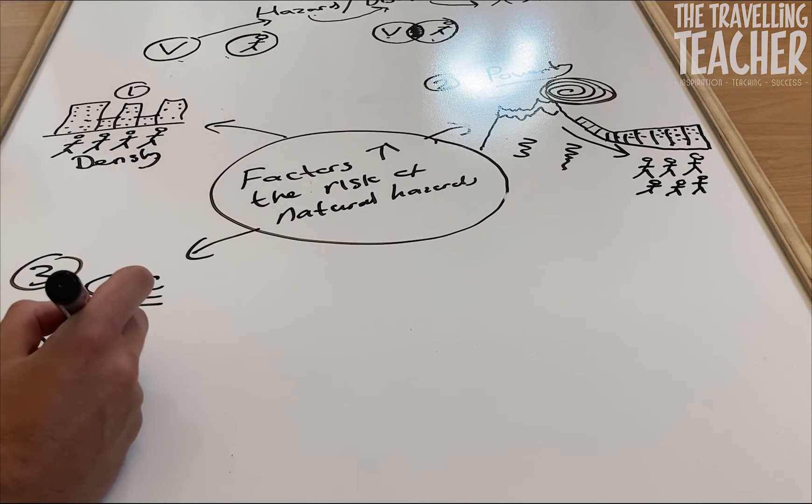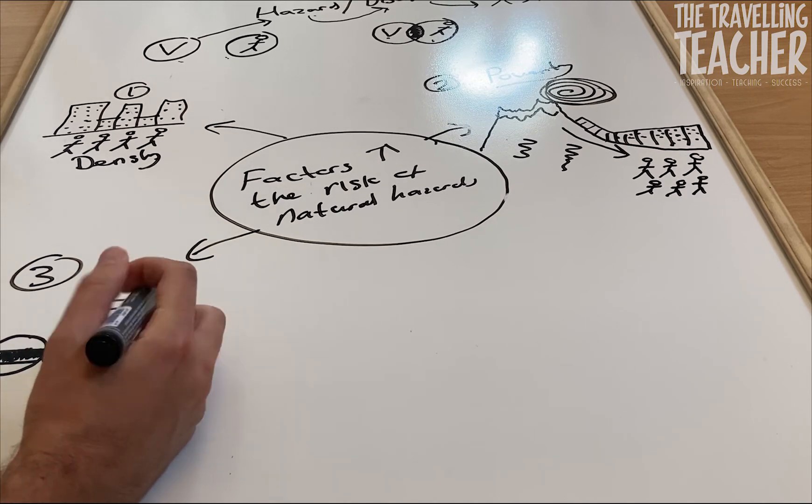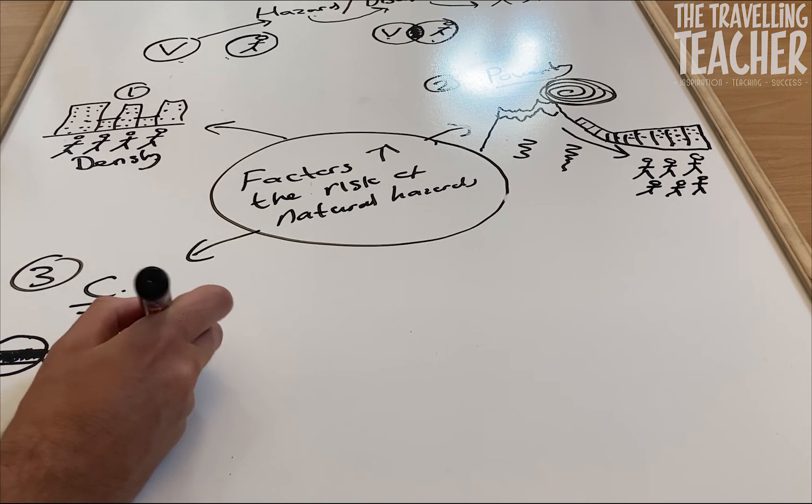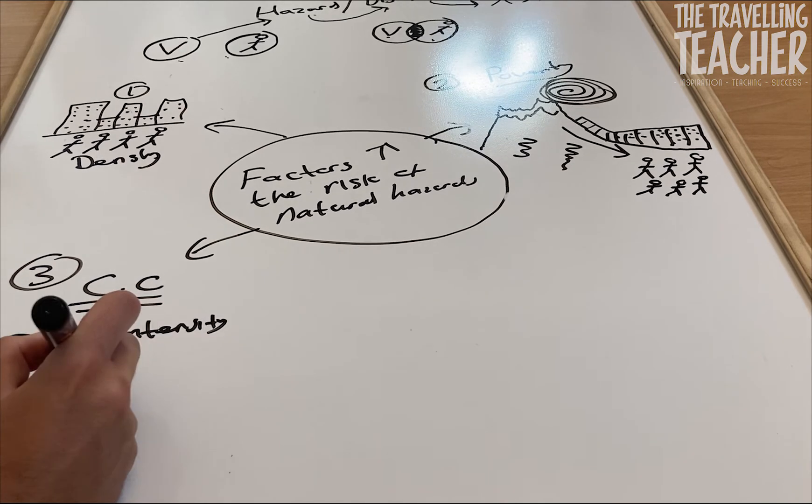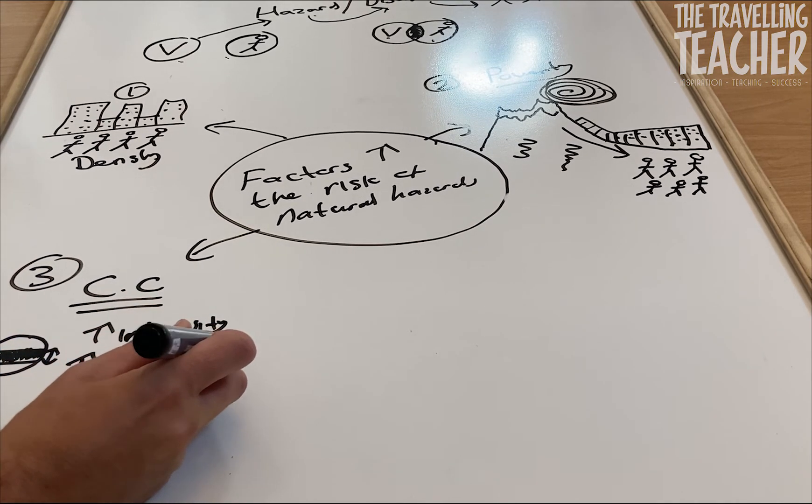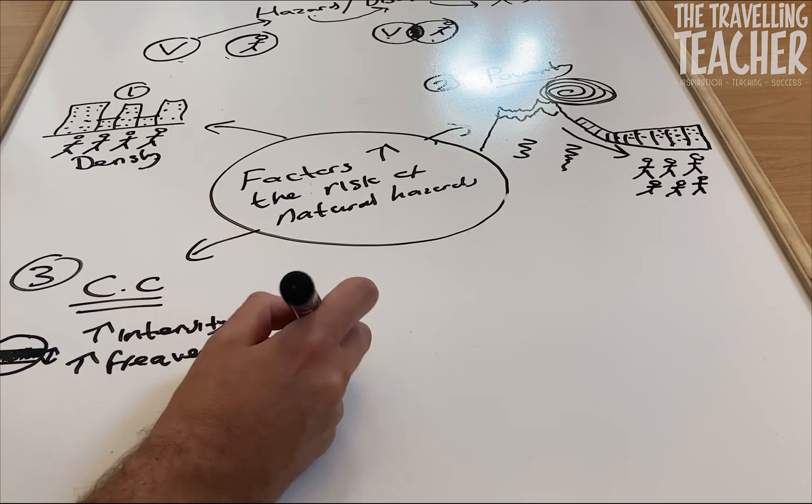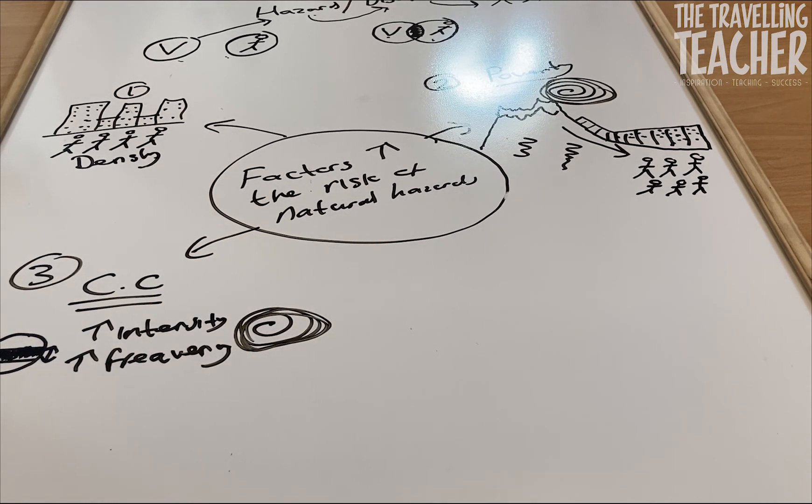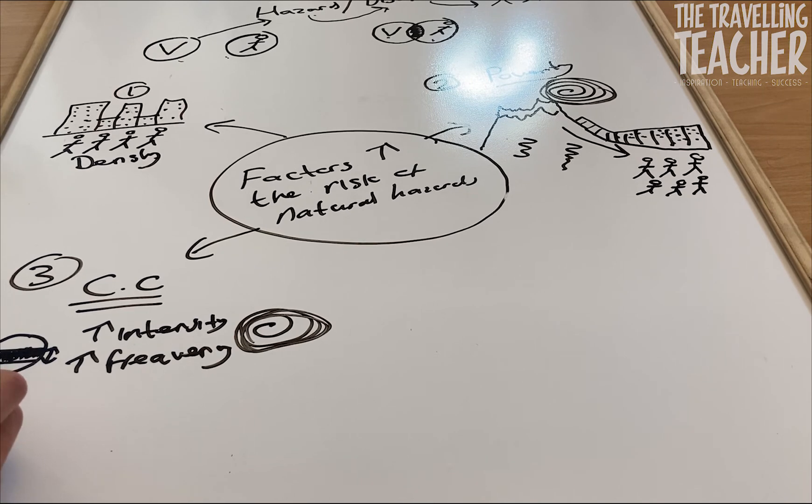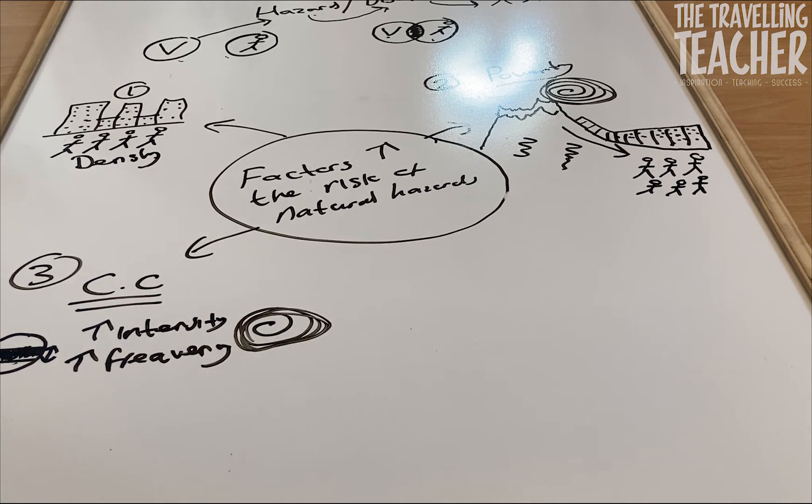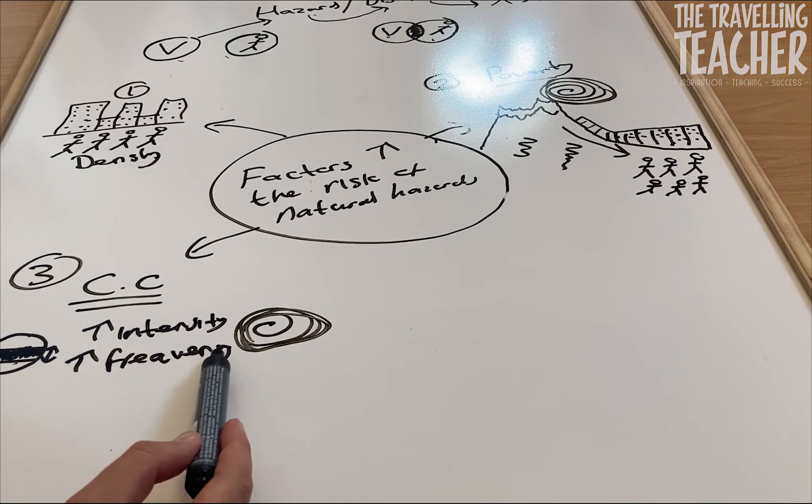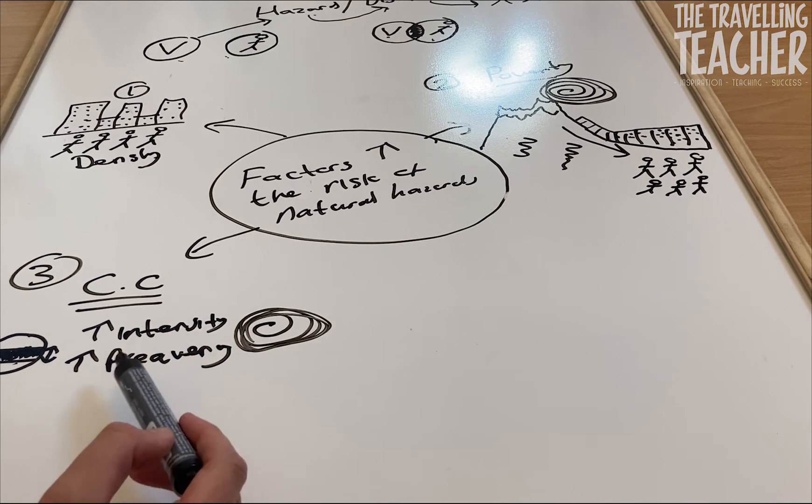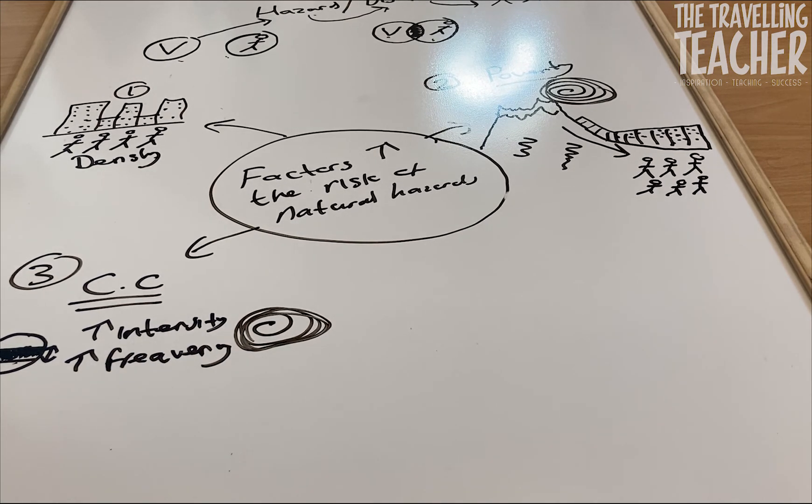There has been an increase in intensity and an increase in frequency of large tropical storms. So anyone living within that region of the world, especially in an LIC, especially along coastal areas, southeast Asia would be a perfect example, they're going to be more at risk of the increased intensity and increased frequency of large tropical storms.